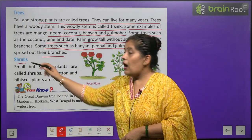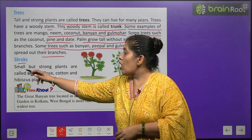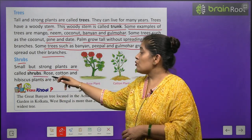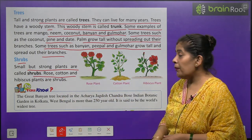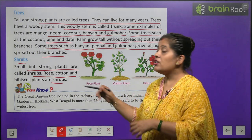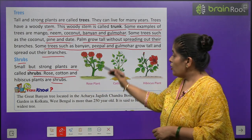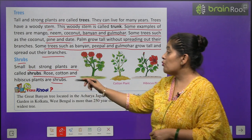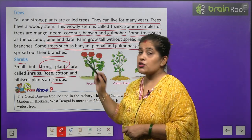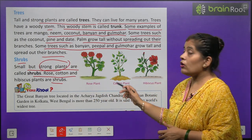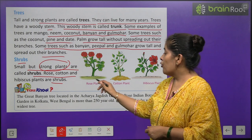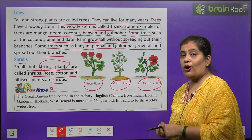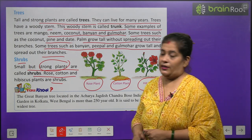Now we will learn about shrubs. Small but strong plants are called shrubs. Rose, cotton, and hibiscus plants are shrubs. Shrubs are small but very strong — bahut mazboot hote hain. Their examples are rose plant, cotton plant, and hibiscus plant. Ye chhote aur mazboot ped hote hain.